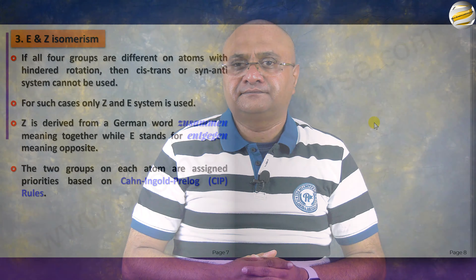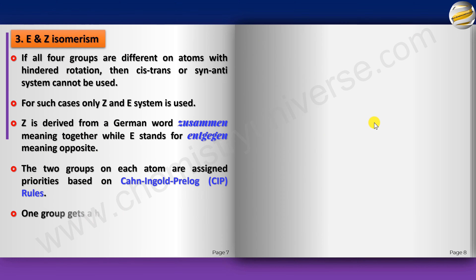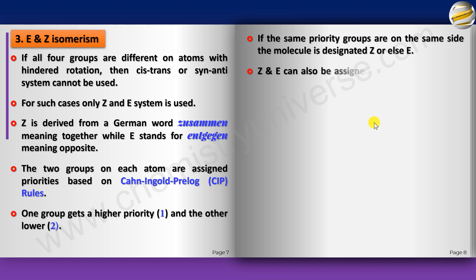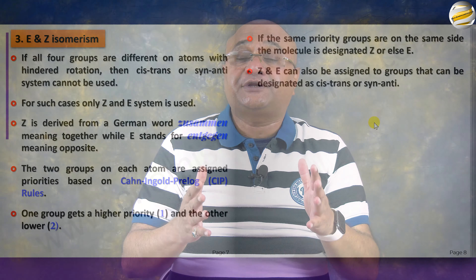Z and E can also be used wherever cis-trans or syn-anti is used — so you can use Z and E everywhere. But exam questions may ask specifically about cis-trans or syn-anti, so it is important to know all three systems and how cis-trans and syn-anti relate to E and Z.